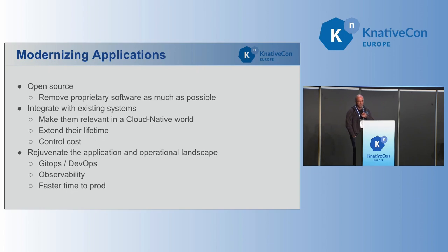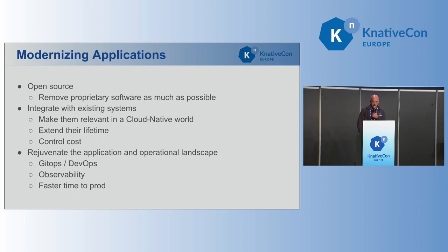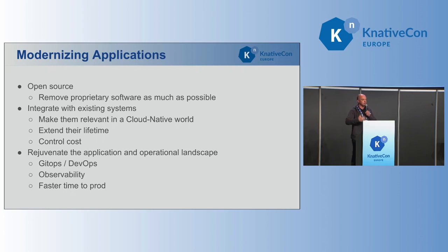The third big thing about modernizing applications is to rejuvenate the overall application and operational landscape. It's more of a culture thing — we've been talking about it in DevOps for a long time. It's changing the culture of the enterprise: how do you deploy apps, how do you maintain them, how do you monitor them? It seems simple here where we are very cutting edge, but there are lots of enterprises for whom adopting GitOps is quite challenging. Monitoring with new things like Prometheus is a big change. Nonetheless, they all wish they could go to prod much faster. That's the benefit of modernizing — go faster and reduce costs.